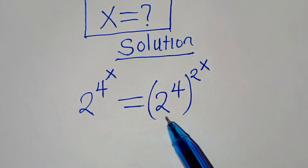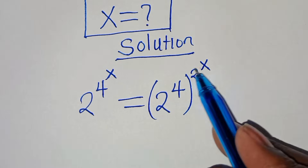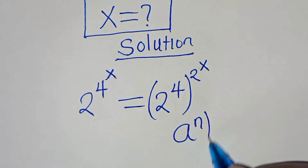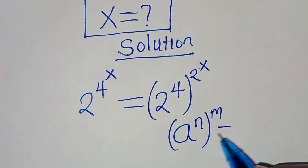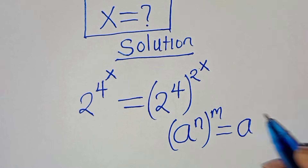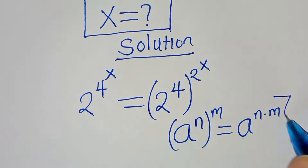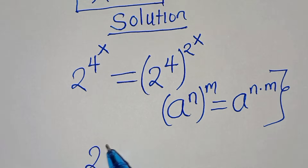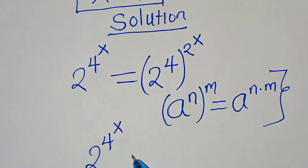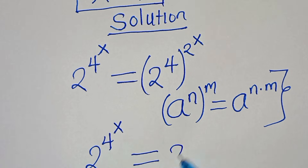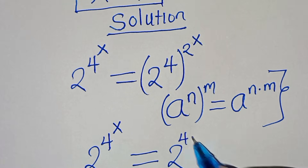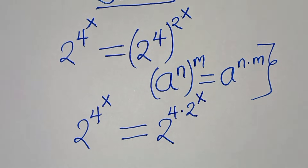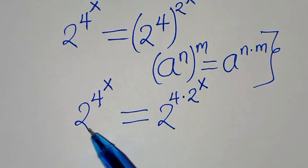Now we have 2 to the power of 4 raised to the power of 2 raised to the power of x. This is in the form of a to the power of n raised to the power of m, which you can express as a to the power of n multiplied by m. Applying this exponent property, we get 2 to the power of 4 raised to the power of x equals 2 to the power of 4 multiplied by 2 to the power of x.